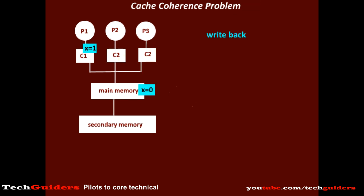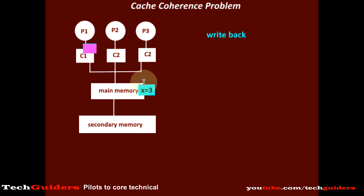There can be multiple writes to the same data or to different data within the same block. In the write-back approach, for every write we never update the main memory. Only when we replace that block in the cache will the final value be returned to the main memory. Until the value is updated, the processor will stop the main memory from replying to any other read requests from any other processor.